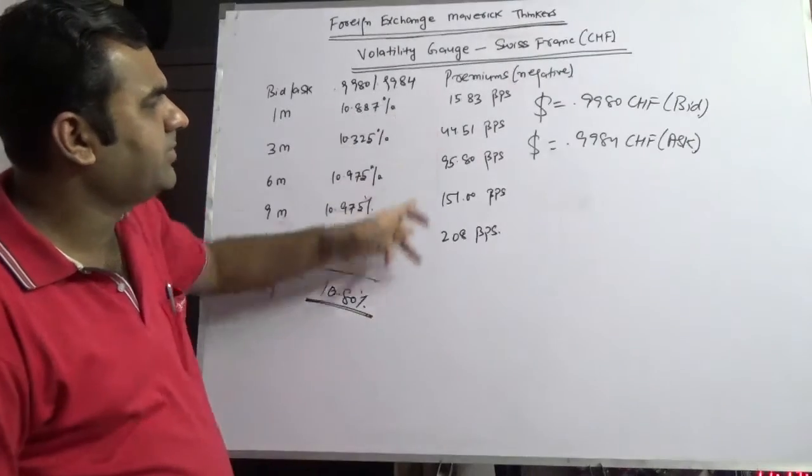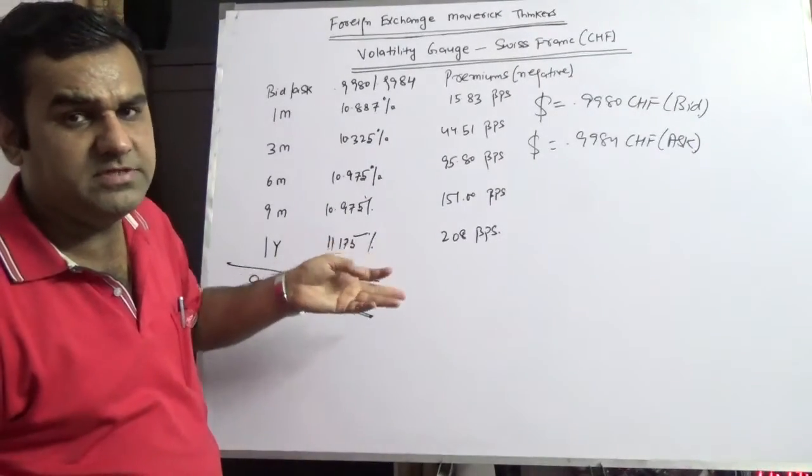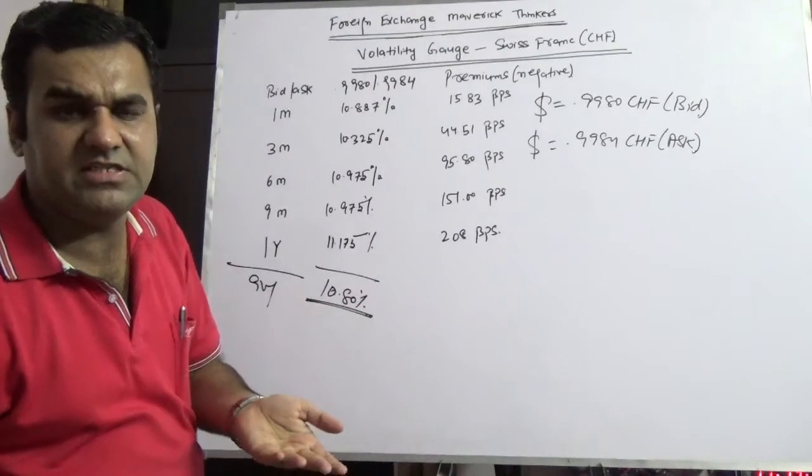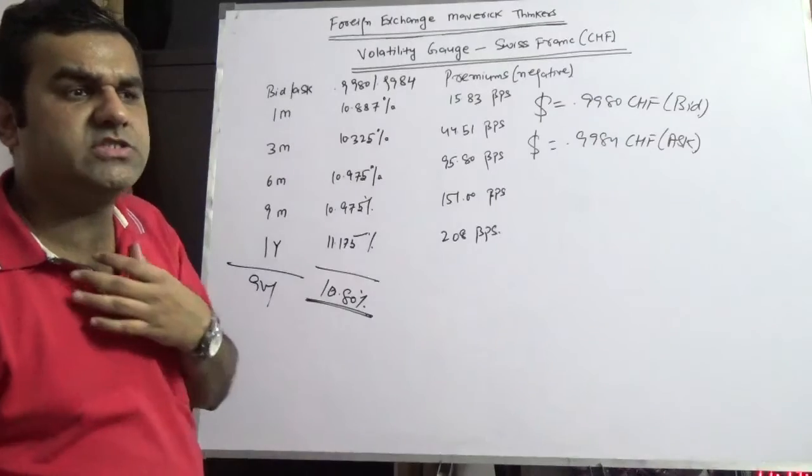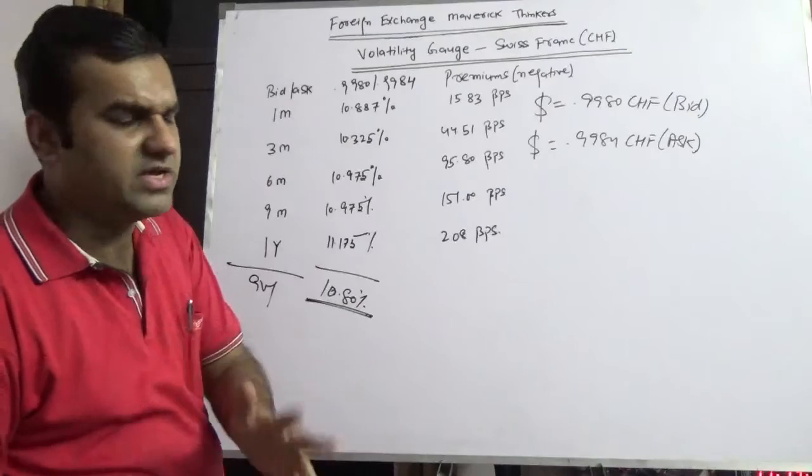Secondly, the premiums of Swiss franc is negative. Euro is also negative, GBP is also negative, not to mention the Japanese yen which is having negative interest rate. It is negative. Aussie dollar to an extent is negative. Kiwi, which stands for New Zealand dollar, is also negative.